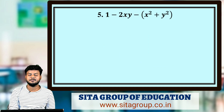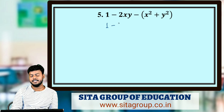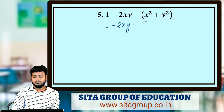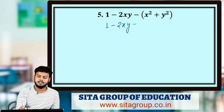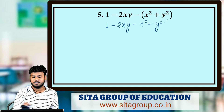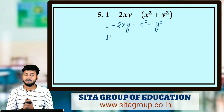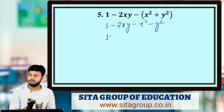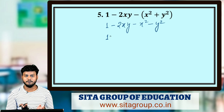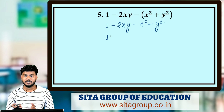Next question: 1 - 2xy - (x² - y²). How will you solve this? First, open the bracket — since the sign is negative, the signs inside will change, so -(x² - y²) becomes -x² + y². Now we have 1 - 2xy - x² + y², which gives us three terms: -x² + y² - 2xy. We know (a - b)² = a² - 2ab + b².